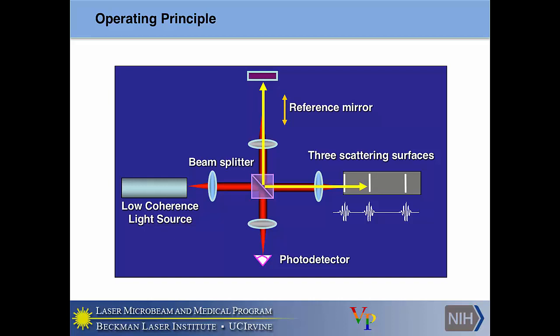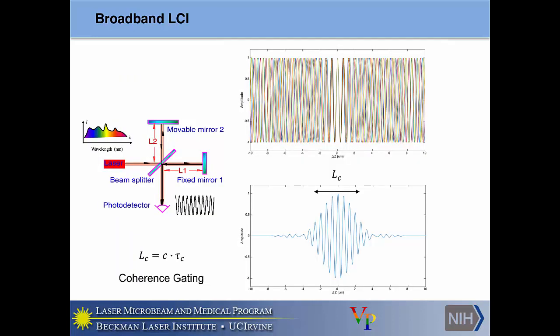Q: Before you went to OCT, you talked about spatial and temporal coherence, and showed situations with poor temporal coherence but good spatial coherence. In this idealized case, are you relying on both? A: In this idealized case, we have a collimated beam on both arms, so we require high spatial coherence. As light travels through tissue, it becomes less spatially coherent. We want high spatial coherence, but low temporal coherence — the poor temporal coherence is actually desired because it gives us this small coherence length, which is important as we move forward.